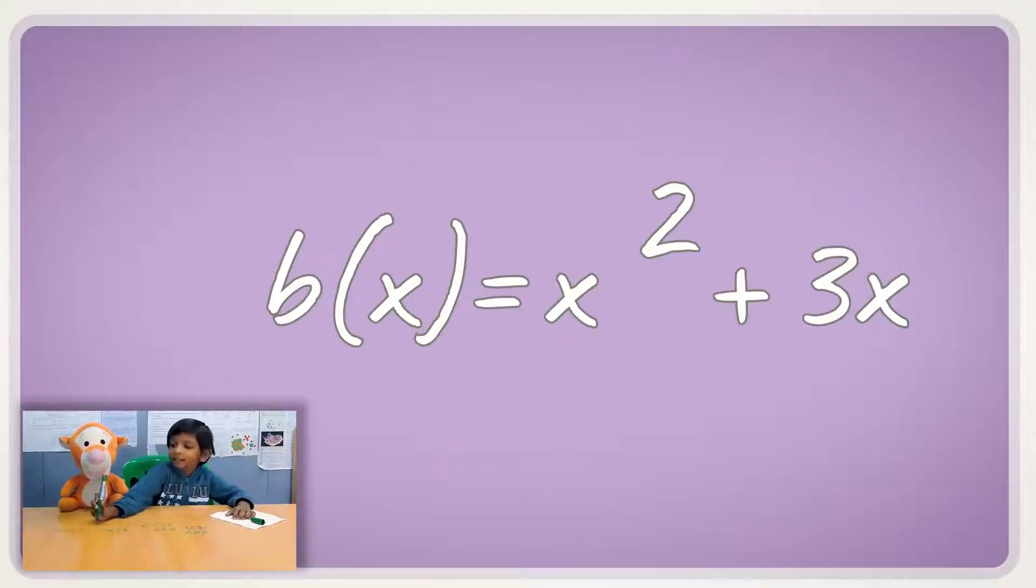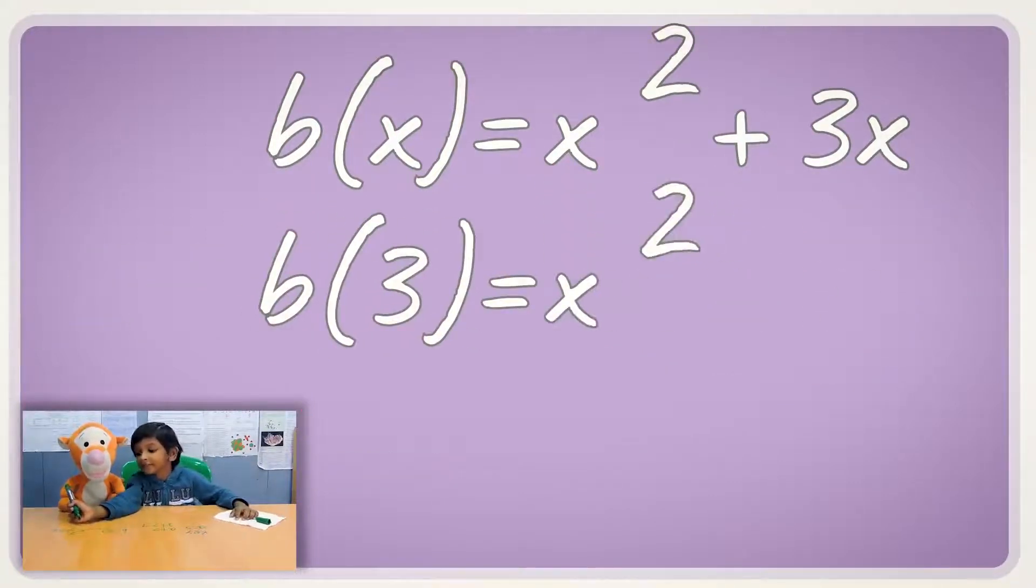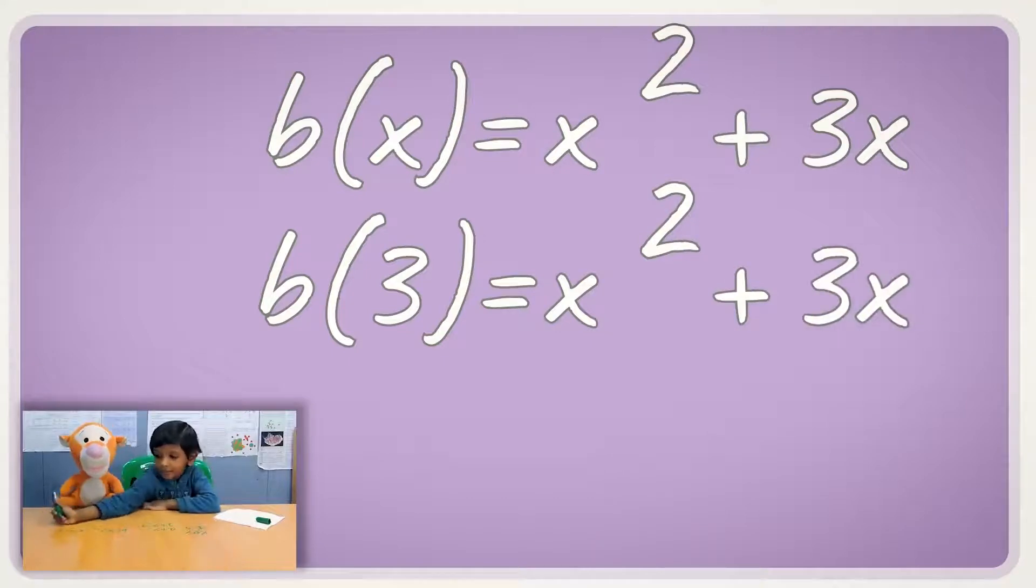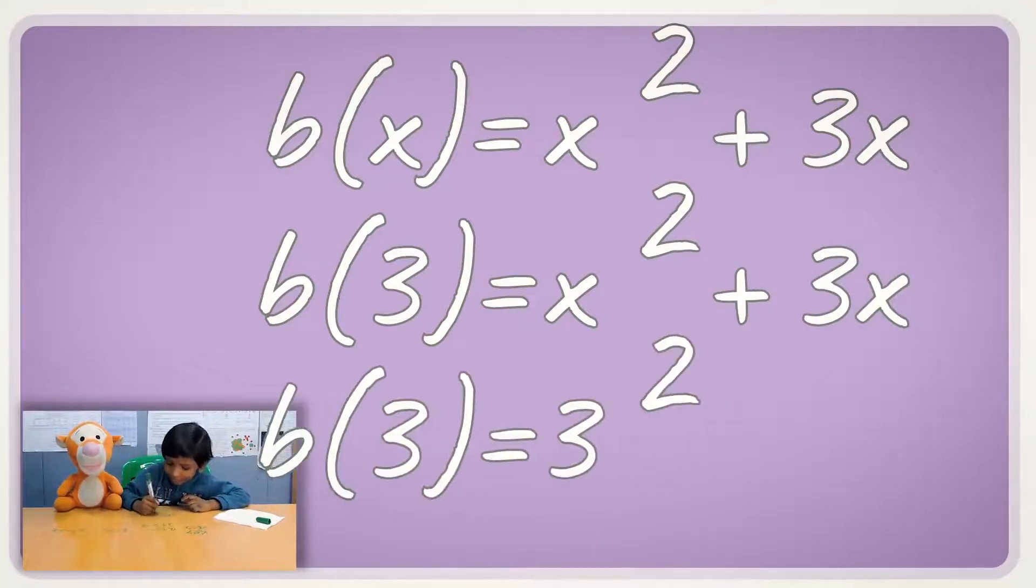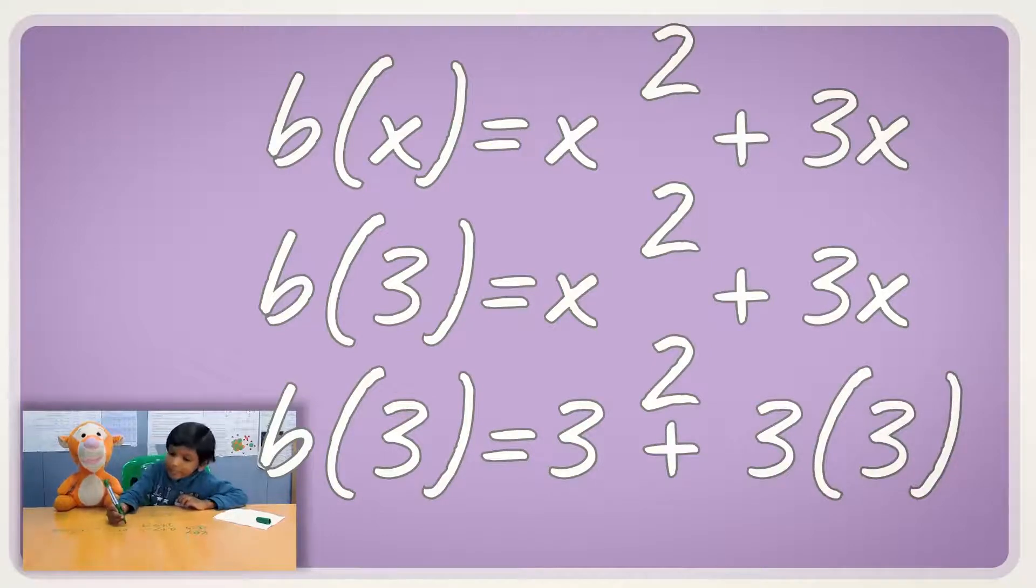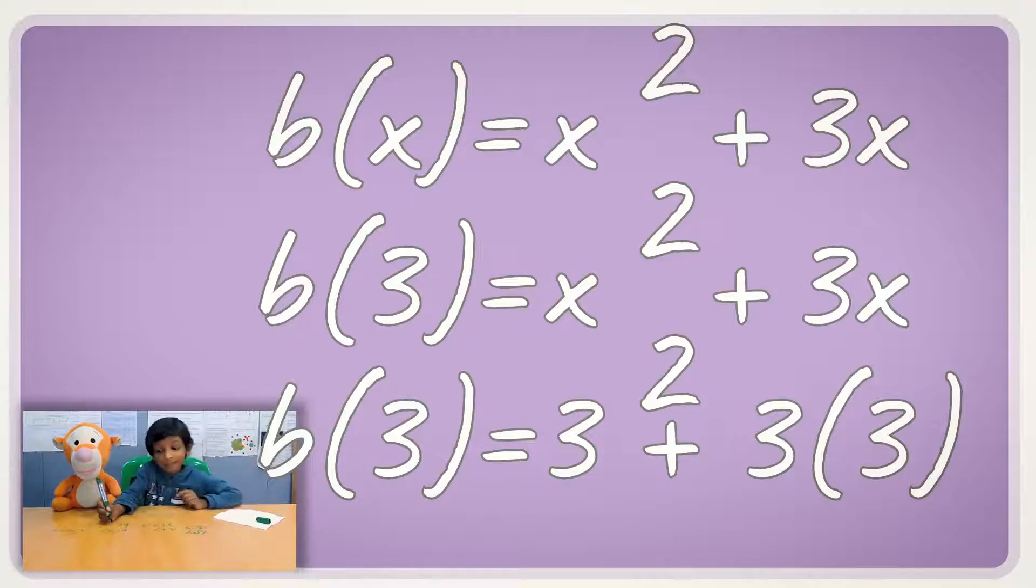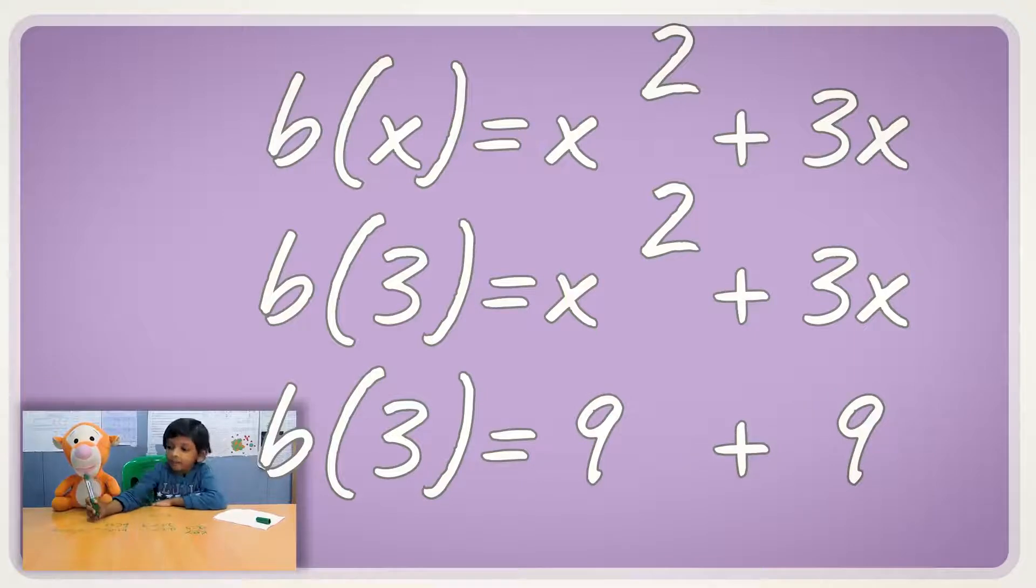And let's say the x was equal to 3. And any x's were equal to 3. It's just like substitution, right? Yeah. We are going to have this one number. Okay. This will be a 9 and this will be a 9. That will make 18. Okay.